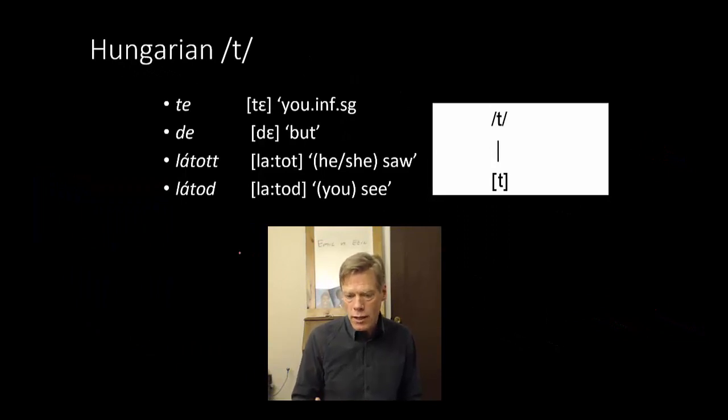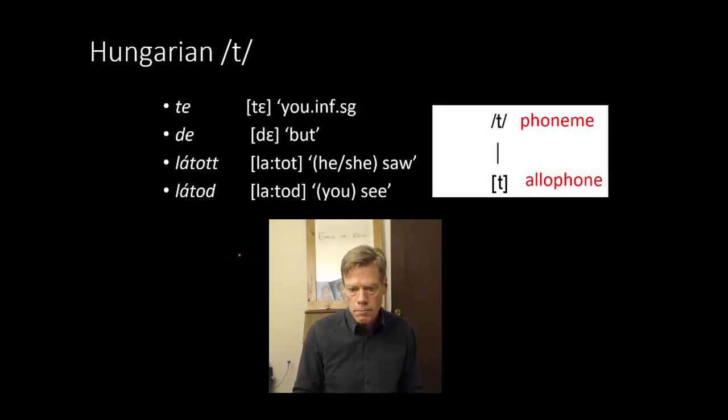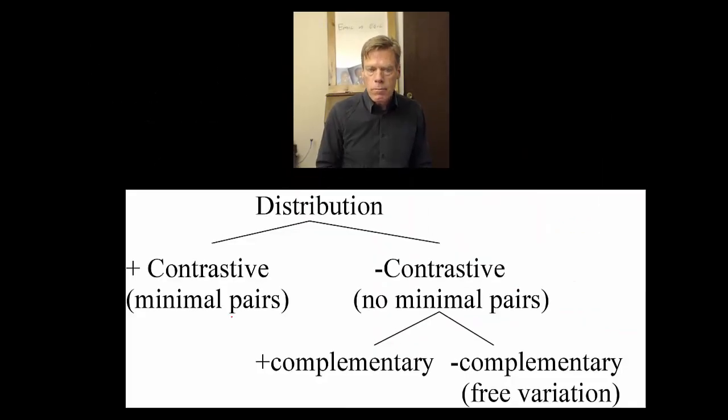And that also means that there's a single allophone for both of those phonemes. Likewise in Hungarian, whereas I said, there's only one T. So there's only one phoneme T and only one allophone. Which brings us to the question of how do we know whether there's more than one phoneme or just more than one allophone? Well, this is where we get into distribution.